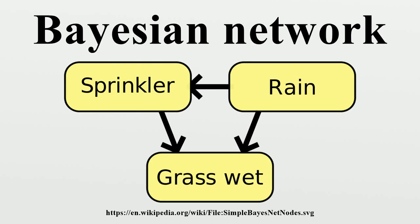A Bayesian network, Bayes network, belief network, Bayes model, or probabilistic directed acyclic graphical model is a probabilistic graphical model that represents a set of random variables and their conditional dependencies via a directed acyclic graph.